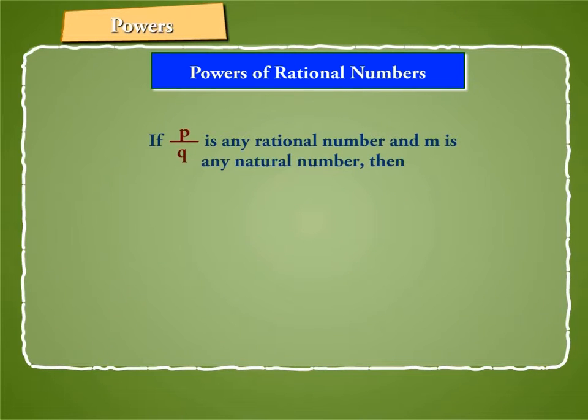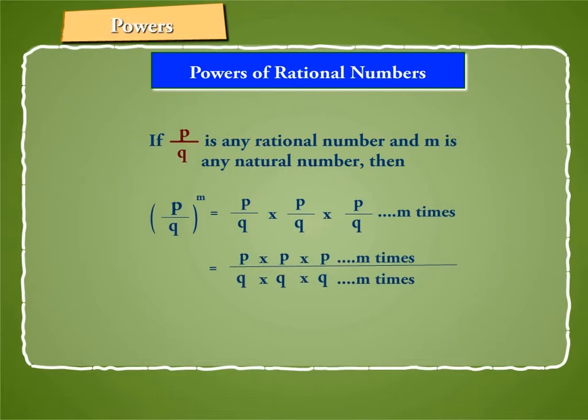Hence, if P by Q is any rational number and M is any natural number, then P by Q whole raise to power M is equal to P by Q into P by Q into P by Q M times, is equal to P into P into P M times by Q into Q M times, is equal to P raise to power M by Q raise to power M.